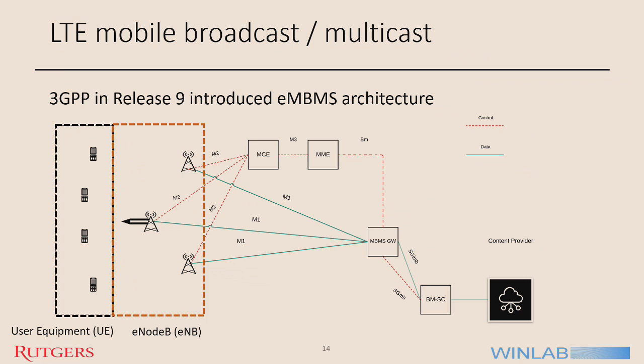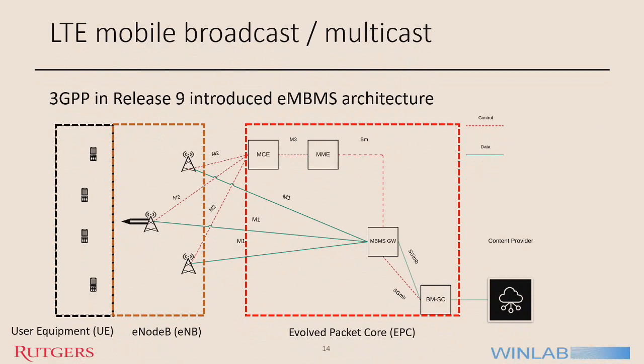The MBMS gateway allocates IP multicast addresses to all eNodeBs involved in the multicast transmission. The MCE coordinates all eNodeBs responsible for multicast transmission and does session control — it is the brain of the multicast. How does transmission happen at the radio access network? eMBMS uses two types of RAN technologies: Multicast Broadcast Single Frequency Network (MBSFN), discussed in this slide, and Single Cell Point to Multipoint, discussed later.